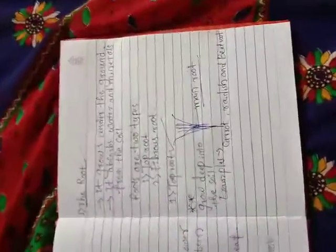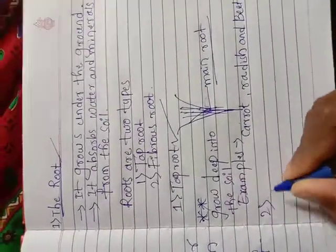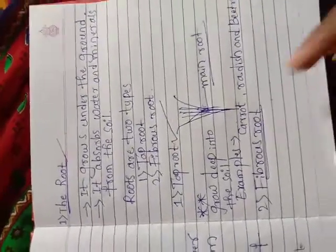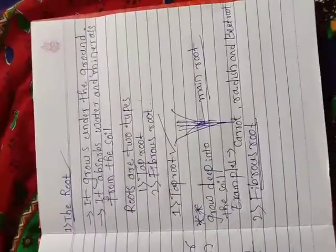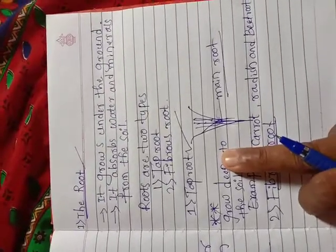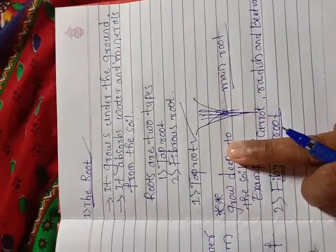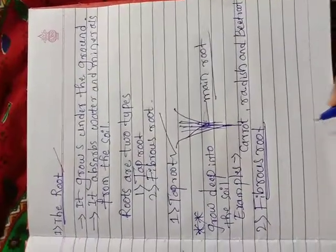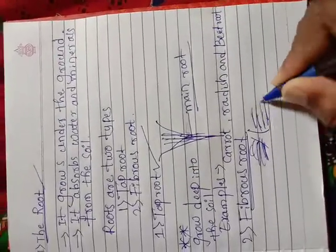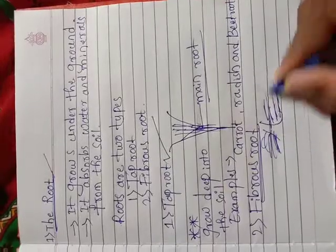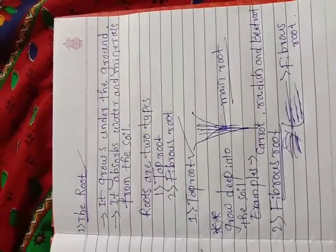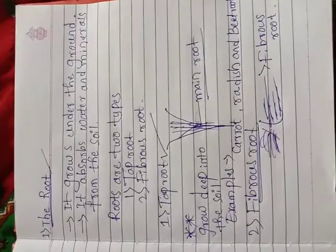Those are the examples of taproot. The other type is fibrous root. Taproot and fibrous root are exactly opposite to each other, because taproot grows deep into the soil but fibrous root does not grow deep into the soil. Also, taproot has one main root, but fibrous root does not have any main root — it has a bunch of small roots.